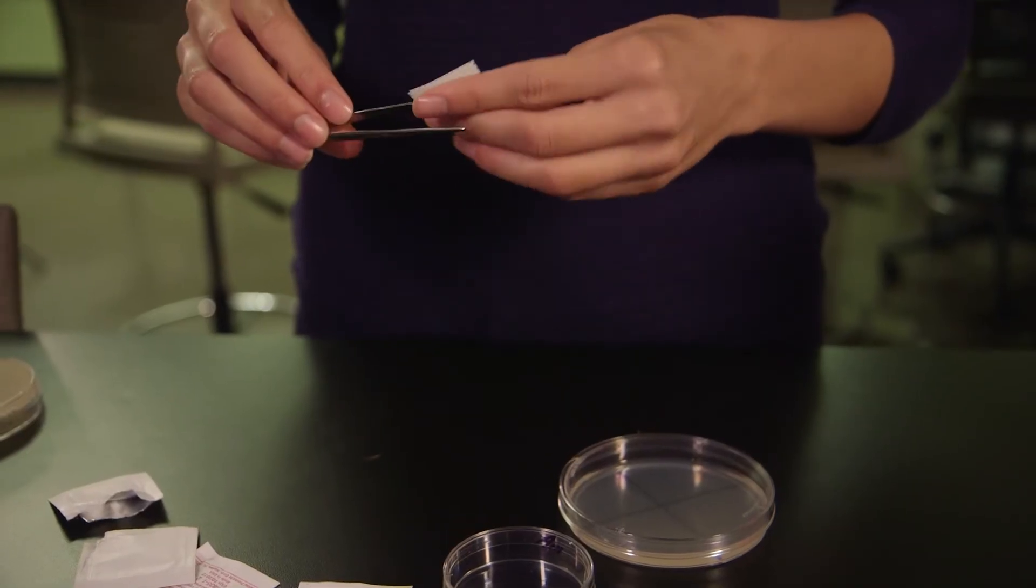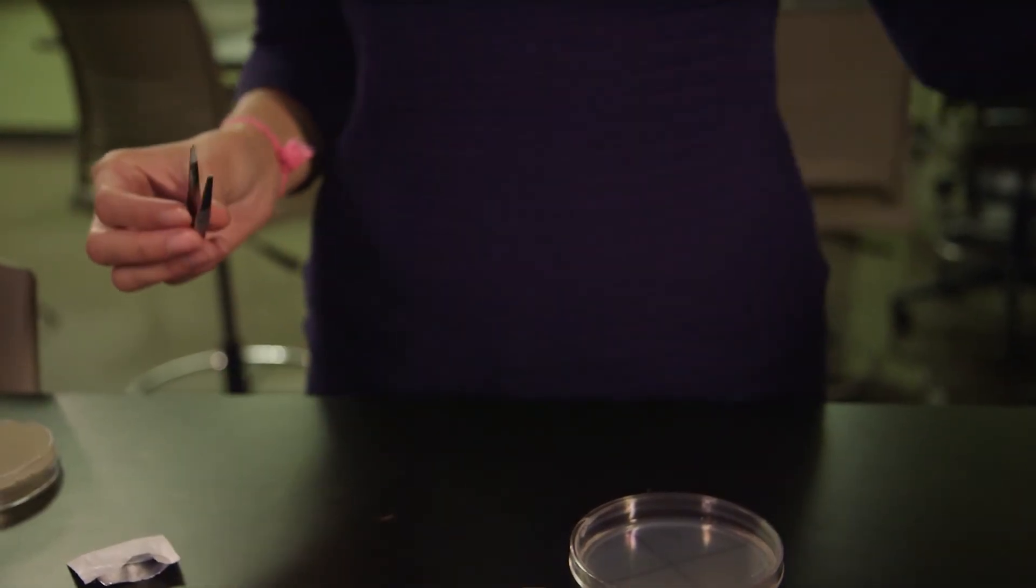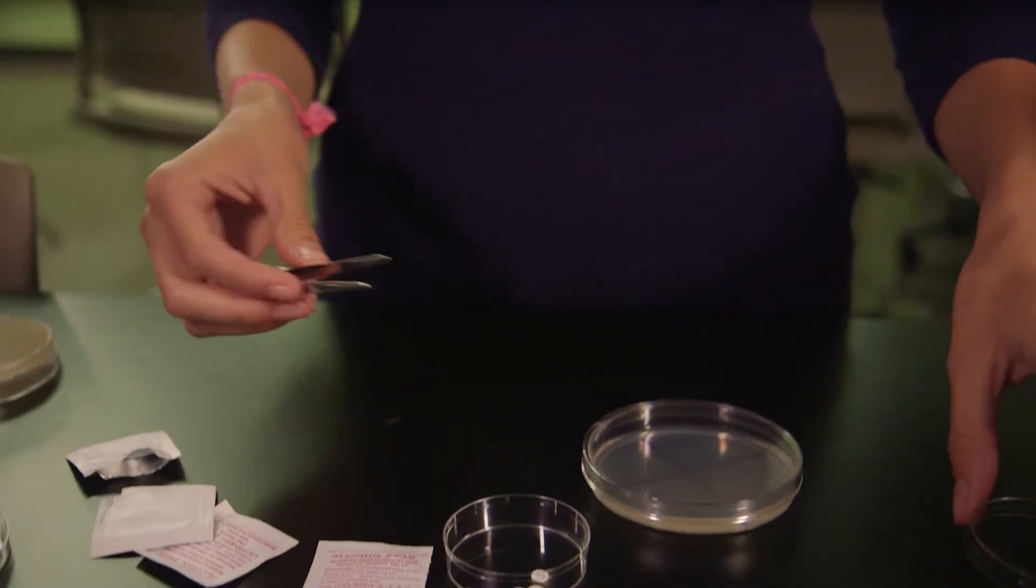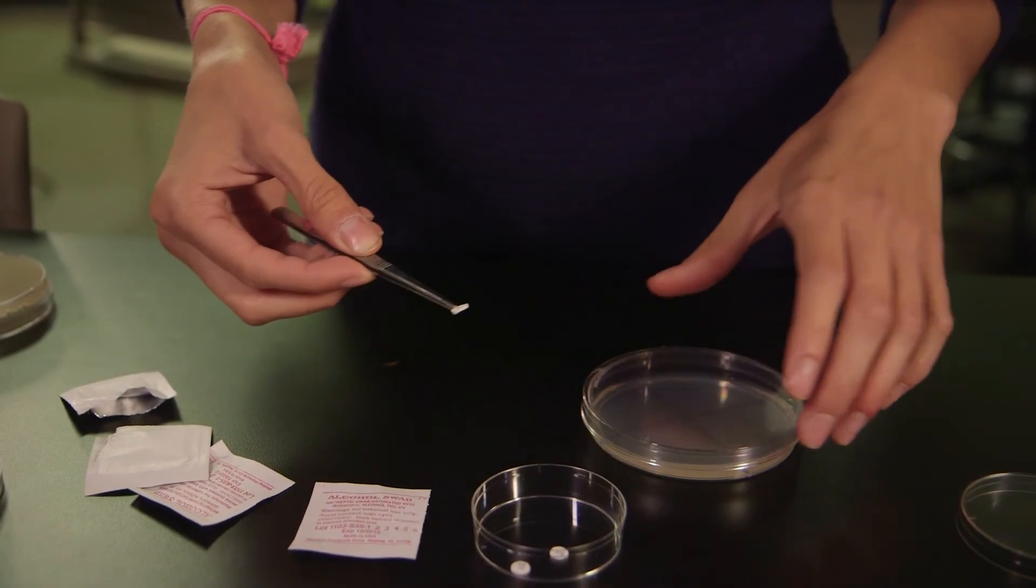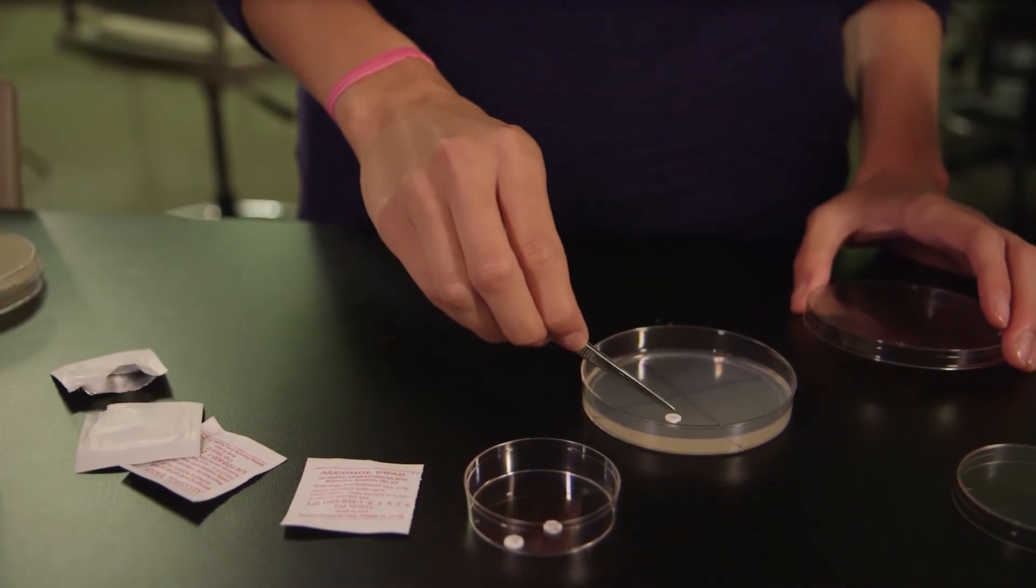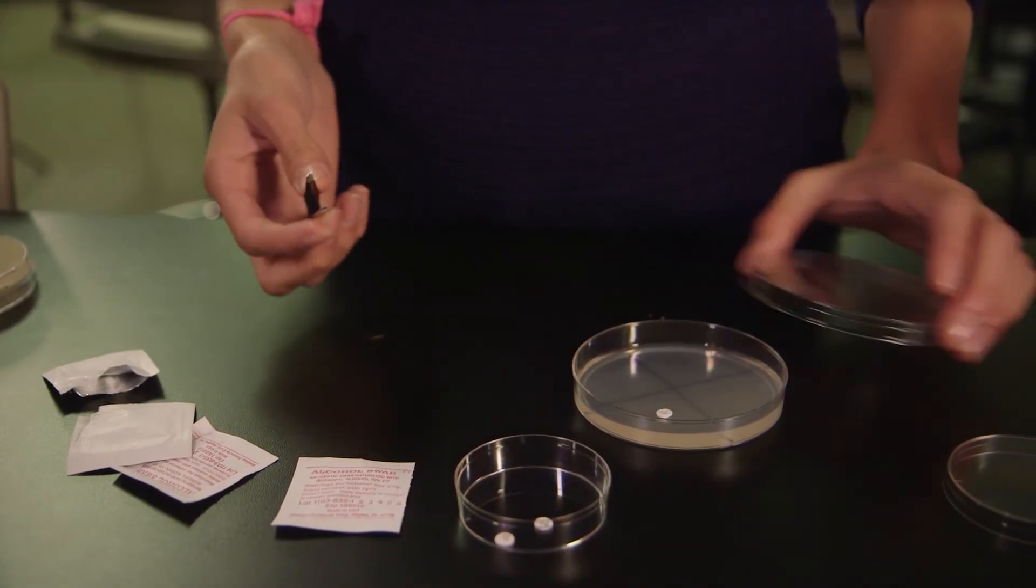You will place one of each of these discs using forceps on the surface of the agar. First, sterilize the forceps using an alcohol pad. Then, open the small petri dish, remove one of the discs, and place it on the surface of the agar in the middle of one of the quadrants. In order to prevent the disc from falling off of the agar, gently press each one so that it sticks on the agar.